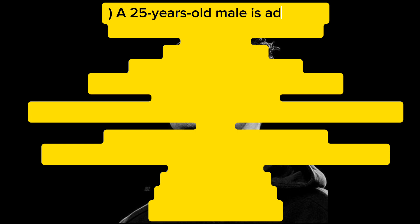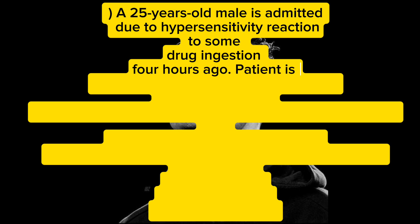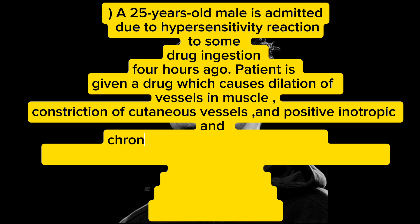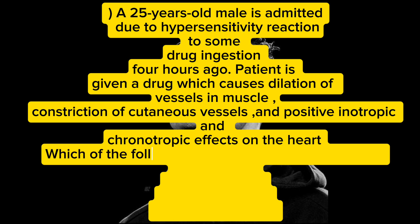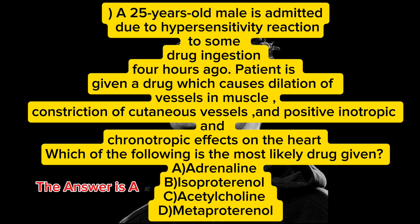A 25-year-old male is admitted due to a hypersensitivity reaction to some drug ingestion four hours ago. The patient is given a drug which causes dilation of vessels in muscle, constriction of cutaneous vessels, and positive inotropic and chronotropic effects on the heart. Which of the following is the most likely drug given? A) adrenaline, B) isoproterenol, C) acetylcholine, D) metaproterenol. The answer is A — adrenaline.